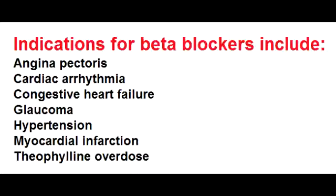Describe how beta blockers are effective in the treatment of hypertension. Beta blockers decrease cardiac output. They also decrease renin secretion due to beta-1 receptor blockade of the juxtaglomerular apparatus cells.